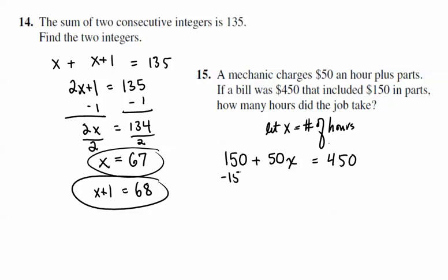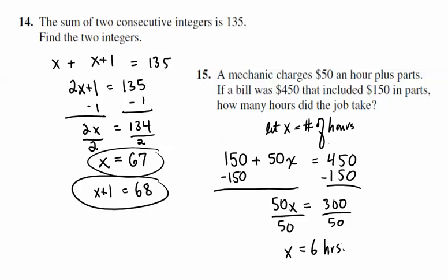And then we just solve this the way we would solve an algebraic equation. Isolate the x on one side, so we subtract 150 from both sides. We get 50x equals 300. Divide both sides by 50, and x equals 6 hours in this case. And so that's our answer for number 15.